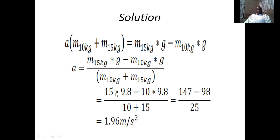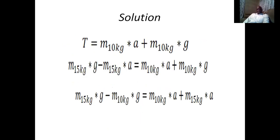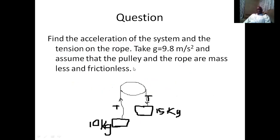Substituting the values — 15 kg minus 10 kg in the numerator, times 9.8 m/s², divided by 15 kg plus 10 kg — we obtain the acceleration of the system. This is the acceleration of both the 10 kg mass and the 15 kg mass, approximately 1.9 m/s². The question also asks us to calculate the tension in the rope.